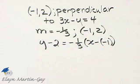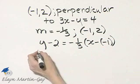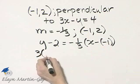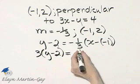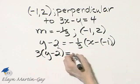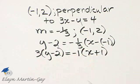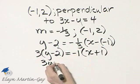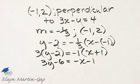I'm going to multiply both sides by 3. So that's 3 times the left side, and then 3 times this. The 3's cancel or divide out, and I'll have negative 1 times x plus 1. So that's 3y minus 6 is equal to negative x minus 1.